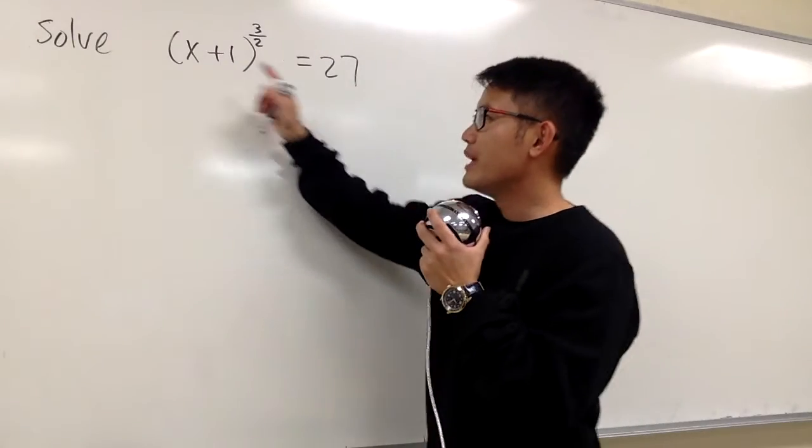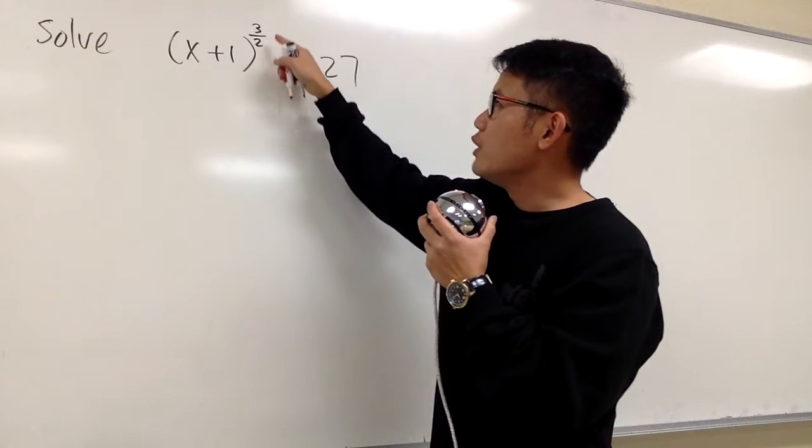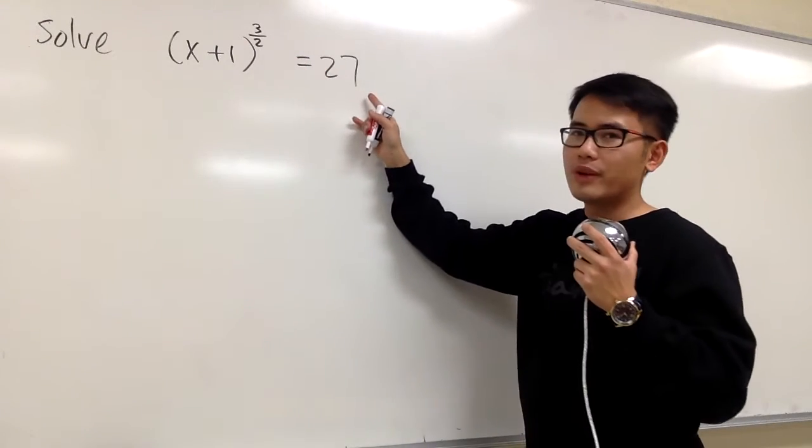Here we are going to solve this equation. We have x plus 1 in the parentheses, and then this is raised to the 3 over 2 power, and this is equal to 27.